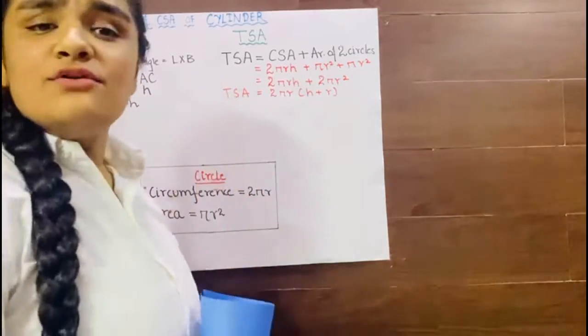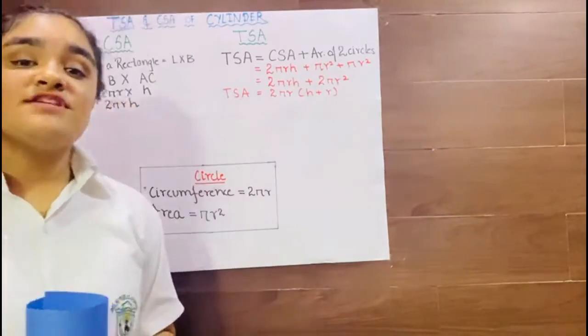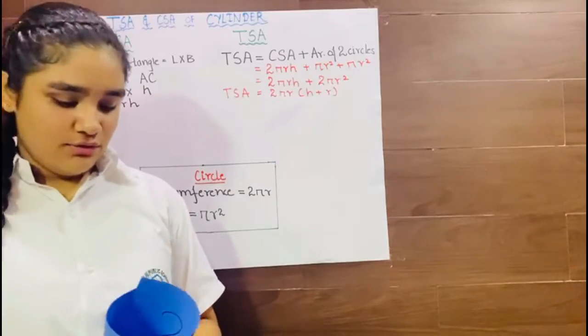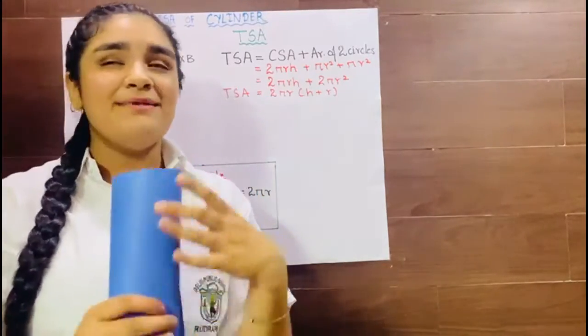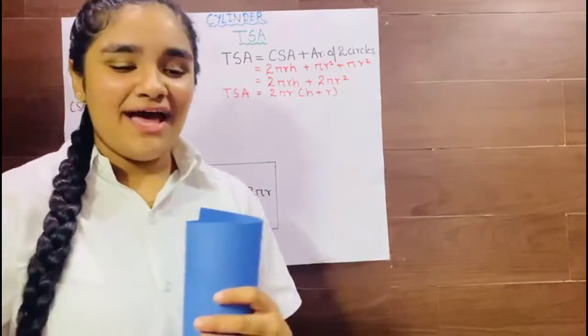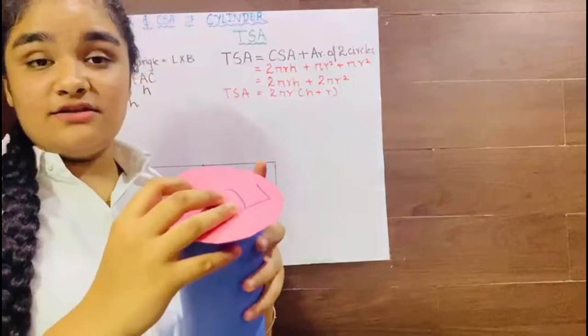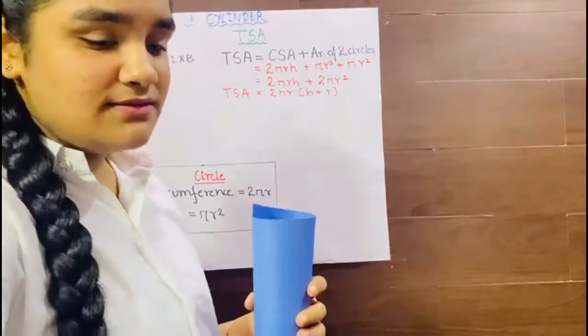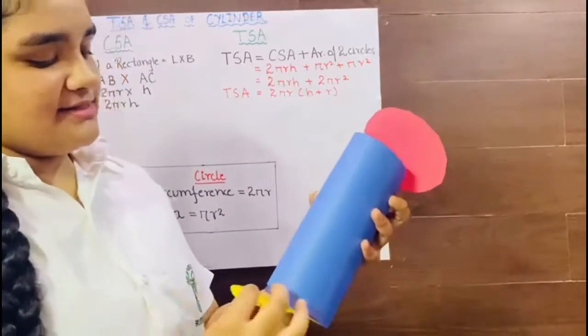Total surface area. As the name suggests total means everything. So this includes the CSA of this whole cylinder and this circle that is at the top and the circle that is at the bottom.